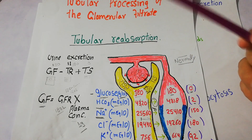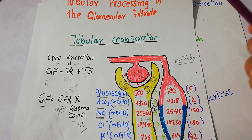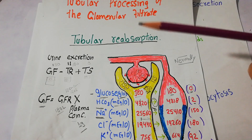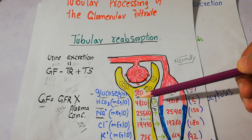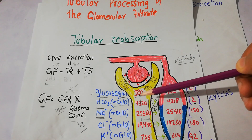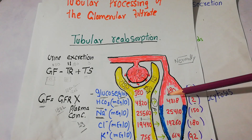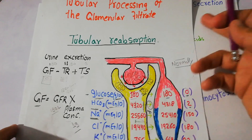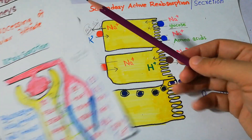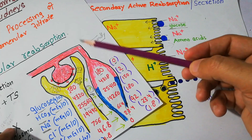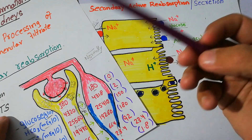Tubular reabsorption is the second step of urine formation. We have discussed different methods through which actively and passively different solutes, ions, and fluids are reabsorbed from the proximal tubule of the kidney into the peritubular capillaries into the blood. As sodium is reabsorbed, the reabsorption of sodium is an active process.